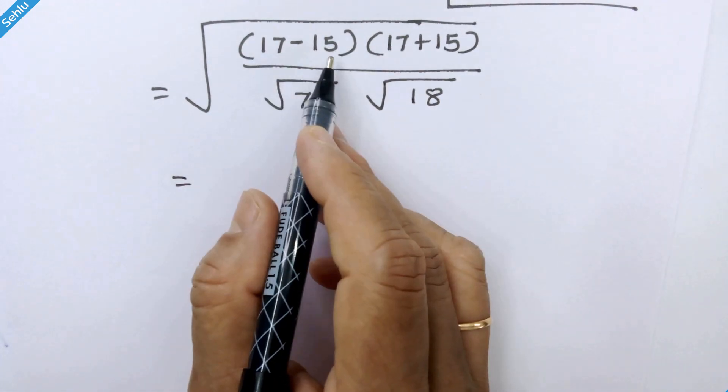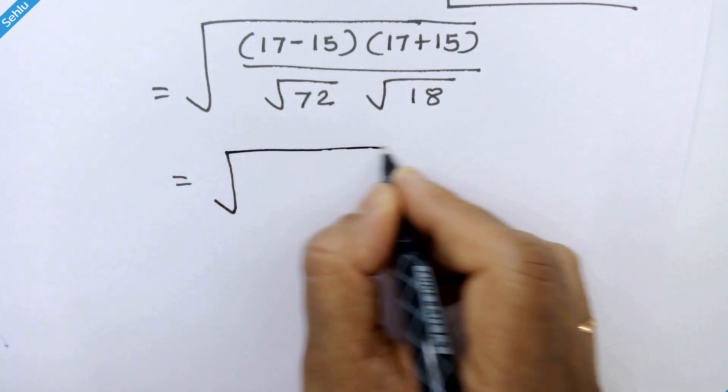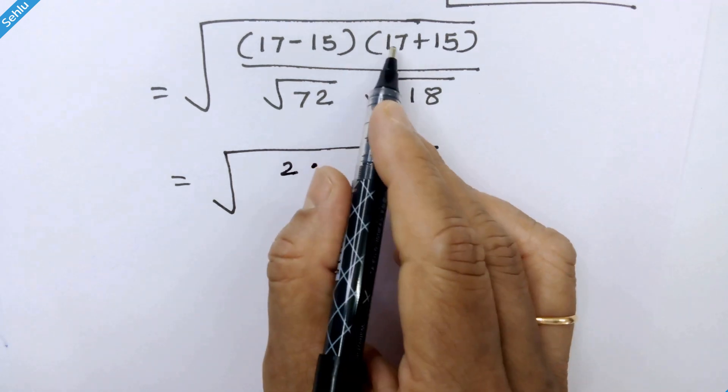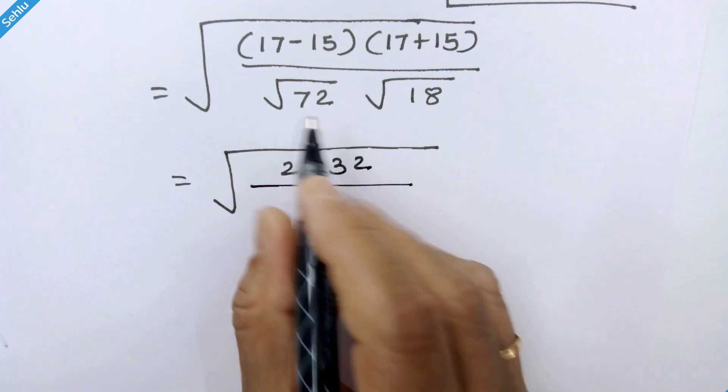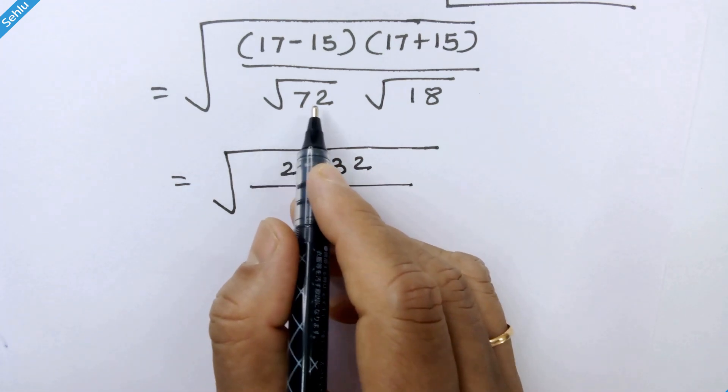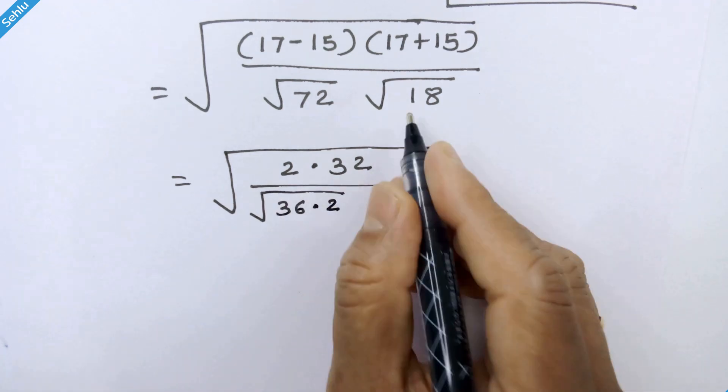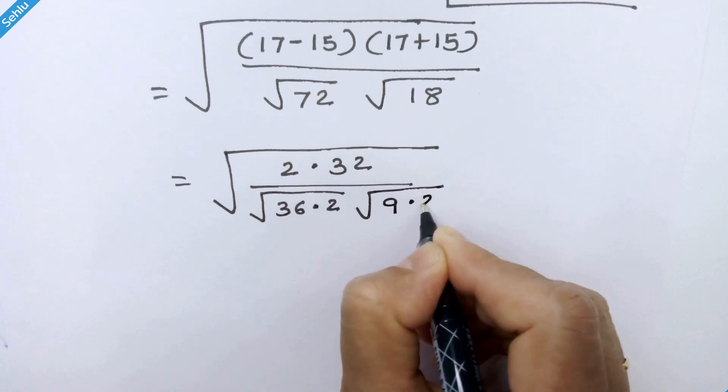17 minus 15 is 2. So we can write it 2 times 32, since 17 plus 15 is 32. And here 72 can be written as square root of 36 times 2, and 18 can be written as 9 times 2.